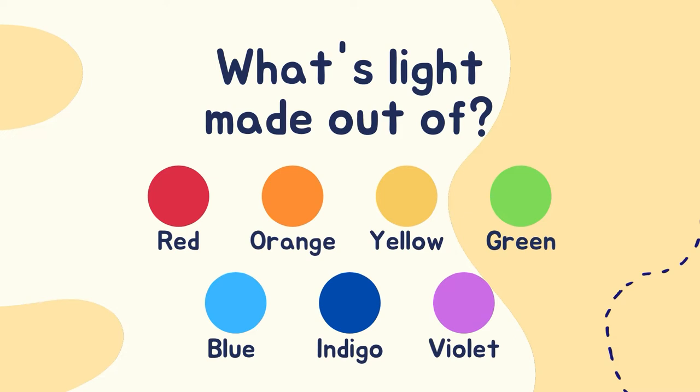White light is made out of 7 colors: red, orange, yellow, green, blue, indigo, and violet. This is why when we have a rainbow, we see 7 colors.